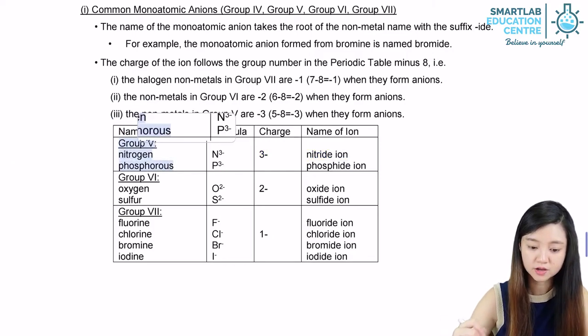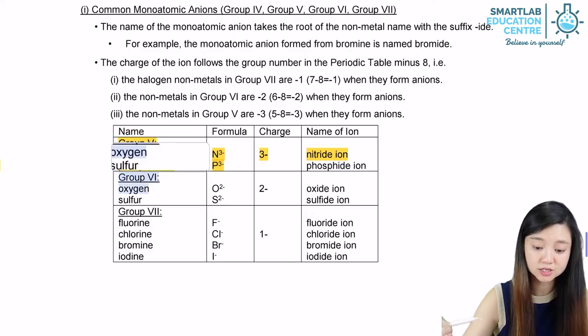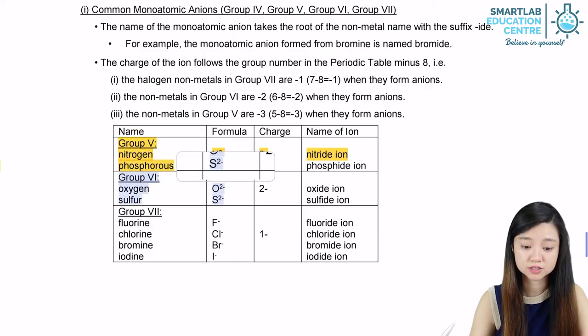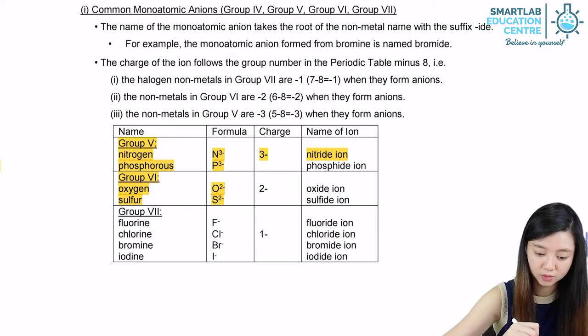For group 6, elements have 6 outermost electrons, so they need to gain another 2 electrons, giving them a 2- charge.